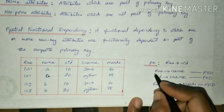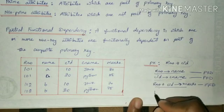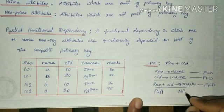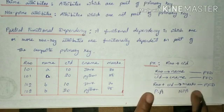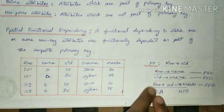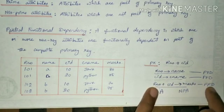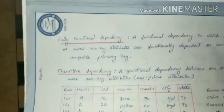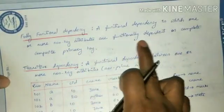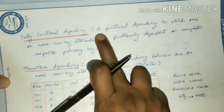On the left side of a functional dependency, we consider the prime attributes: roll number, course ID, or roll number plus course ID. On the right side, we get non-prime attributes. So prime attributes determine non-prime attributes. If a prime attribute — part of the primary key — determines a non-prime attribute, that is partial functional dependency. If the complete primary key determines non-prime attributes, that is fully functional dependency. A functional dependency in which one or more non-key attributes are functionally dependent on the complete composite primary key is called fully functional dependency.